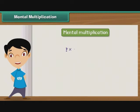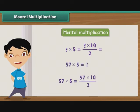To multiply a number by 5, multiply the number first by 10 and then divide the result by 2. For example, to multiply 57 by 5, first multiply 57 by 10 to get 570. Now divide 570 by 2 to get 285 as the result.